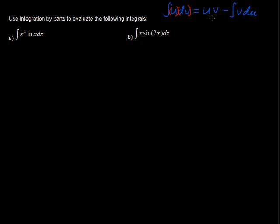Now, we have to pick u and v. I'm going to pick natural log of x for u. So u equals natural log of x and then du equals 1 over x dx.